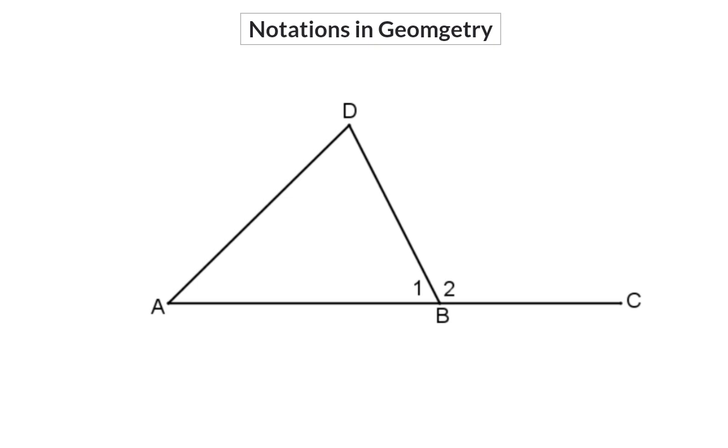If we want to say that we are looking at angle A, we can write angle A, or we can indicate the angle with a symbol on top, or we can describe how the angle is formed, in this case from D to A to B.